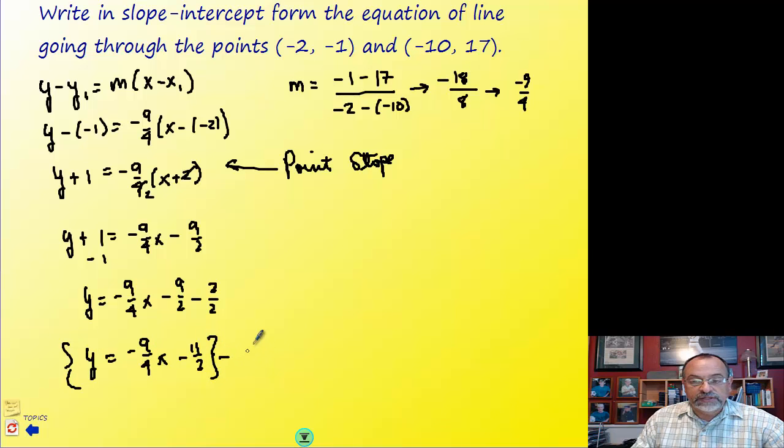So y is equal to negative 9 fourths x minus 11 halves. So this is then the slope-intercept form, even though we began with point-slope. Okay, so we would be done with this problem.